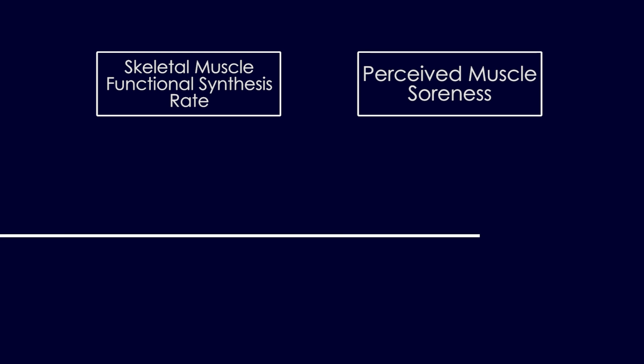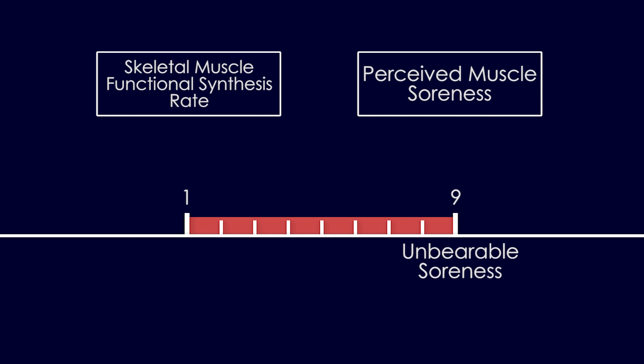Before and after the training protocol, measurements were taken for skeletal muscle functional synthesis rate, to examine muscle protein synthesis, and perceived muscle soreness, where they asked participants to subjectively rate their soreness from 1 to 9, with 1 being the absence of soreness and 9 being unbearable soreness.